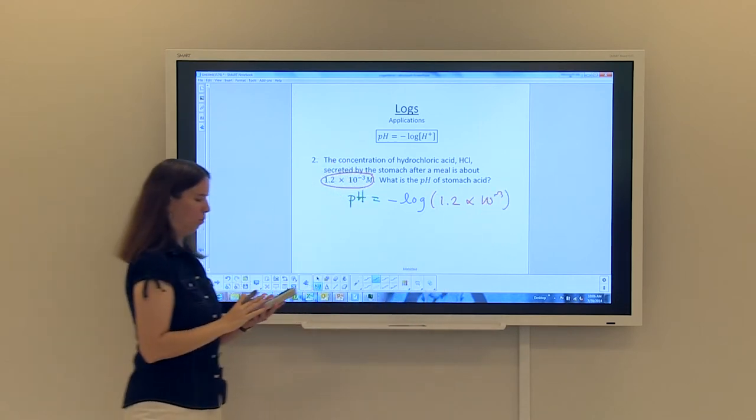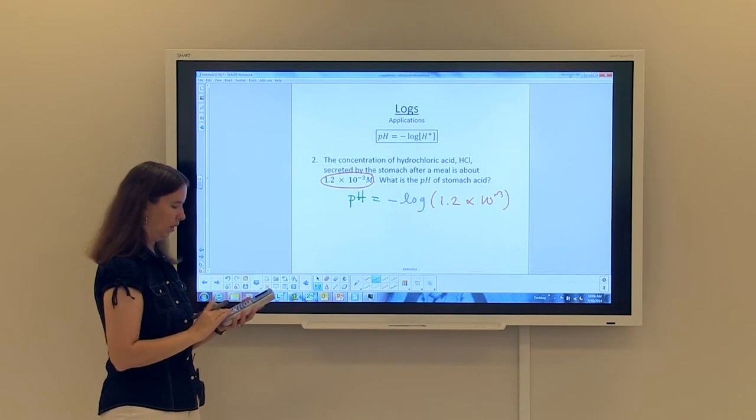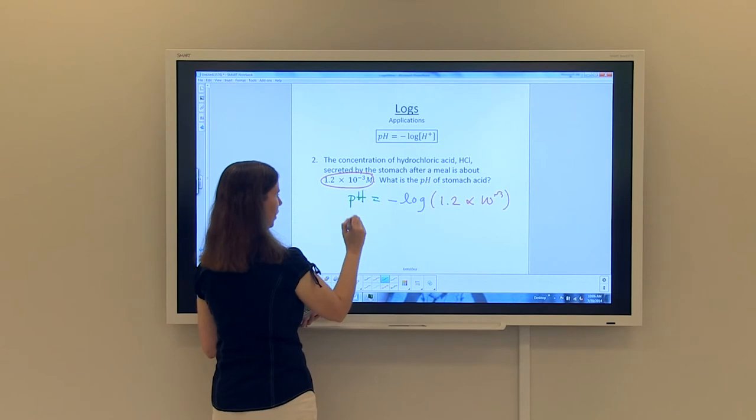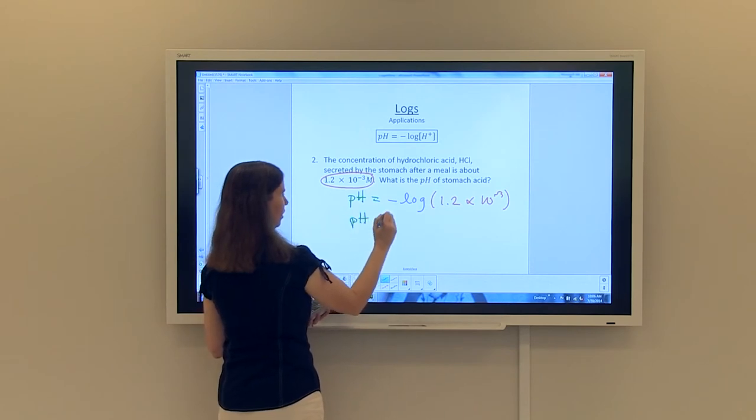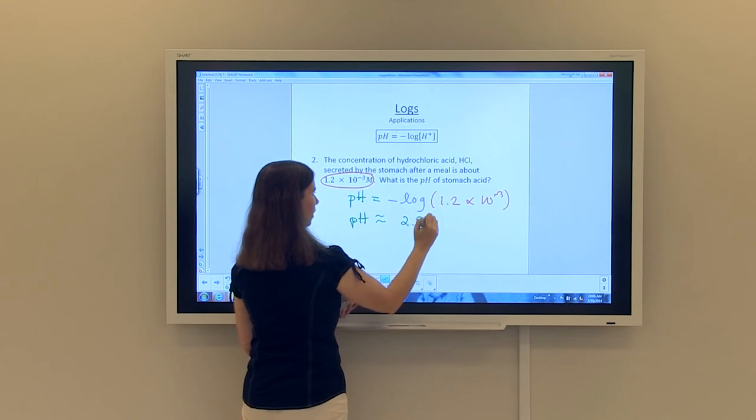And again, we can simply type it all in. So negative log of 1.2 times 10 raised to the negative 3. And we will end up with a pH that is approximately 2.92.